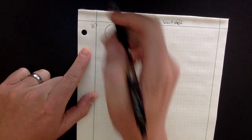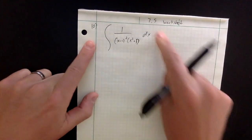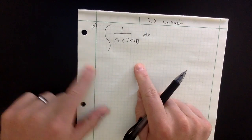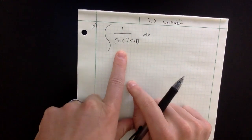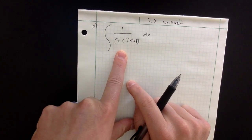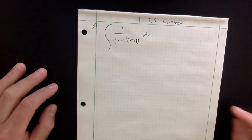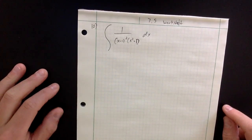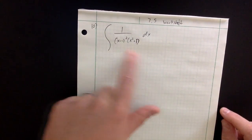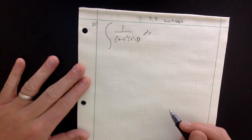I am going to do a problem from the 7.5 worksheet. This was requested from a student — it was the very last problem, a partial fraction decomposition. I'll give a hint on the solutions, but I can go over this entire problem.